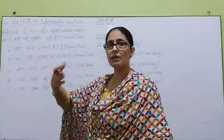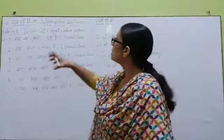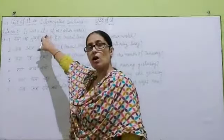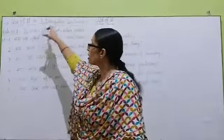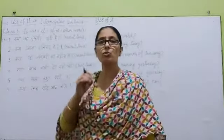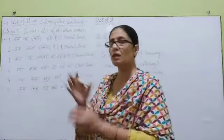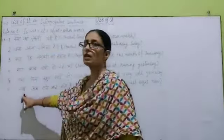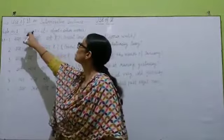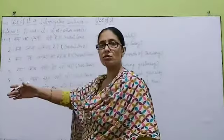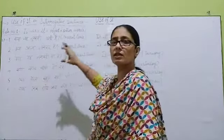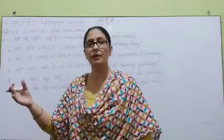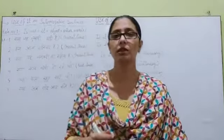Second rule अभी हम कल पढ़ेंगे. इसमें हम देखेंगे — यह वो था जो 'क्या' से start होते हैं. And in the second rule, we will see sentences where कब, कहाँ, कैसे, क्यों, क्या sentence के बीच में आता है. इसमें हमने क्या पढ़ा? 'क्या' हमारा sentence के शुरू में आ जाता है, इसलिए helping verb 'is' or 'was' पहले से शुरू हो जाता है, उसके बाद 'it' का यूज़ करते हैं. तो यह था हमारा first rule, और कल हम पढ़ेंगे rule number two. Thank you.